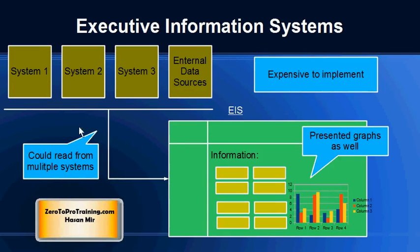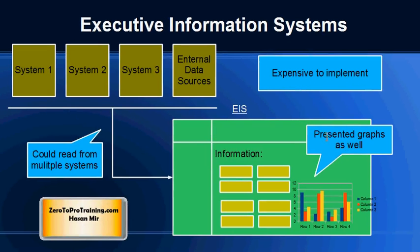Executive Information Systems (EIS) were expensive to implement, so not most companies could afford them. Their salient features included reading data from multiple sources — not necessarily all sources, but more than one — and sometimes data from external sources could also be read. Advanced features like graphs and charts were also incorporated.